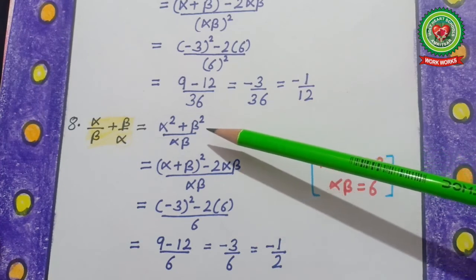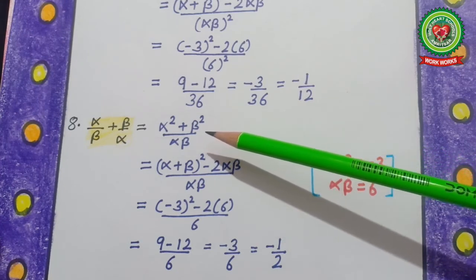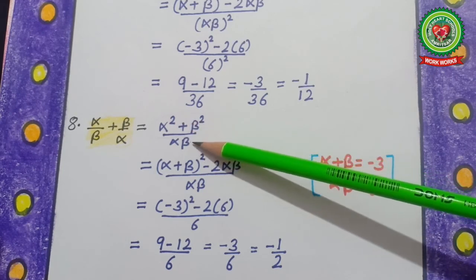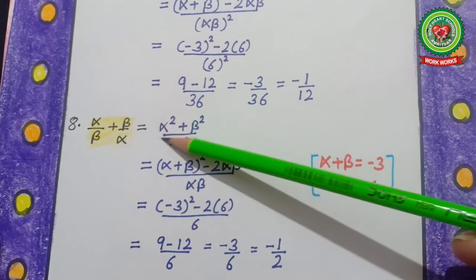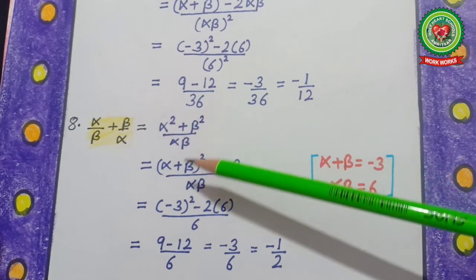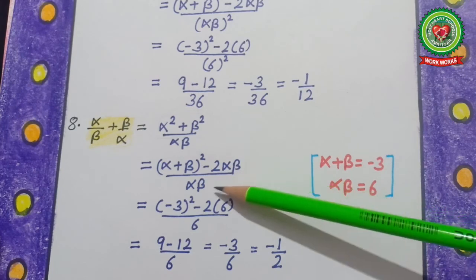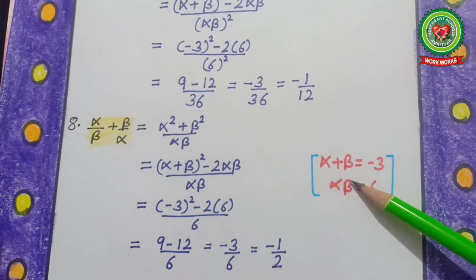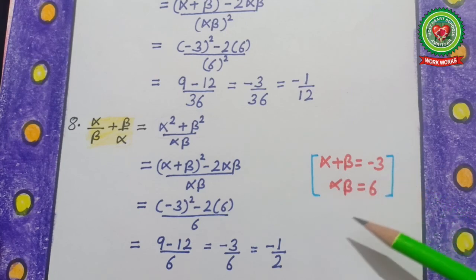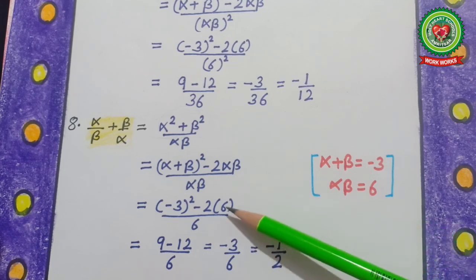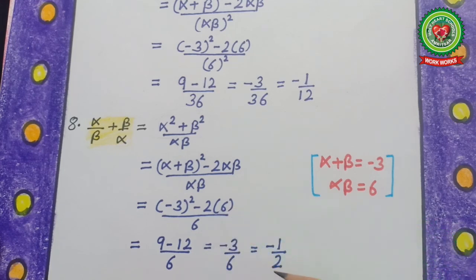Question number 8: α/β+β/α. After taking LCM, the value is (α²+β²)/(αβ). Applying the formula, we get [(α+β)²−2αβ]/(αβ). Filling in α+β = −3 and αβ = 6, after solving, our answer is −1/2.